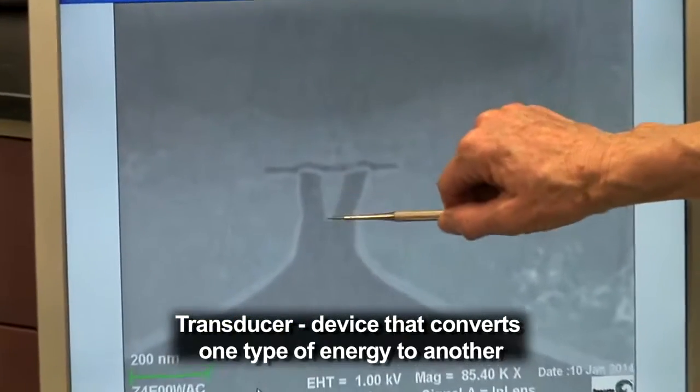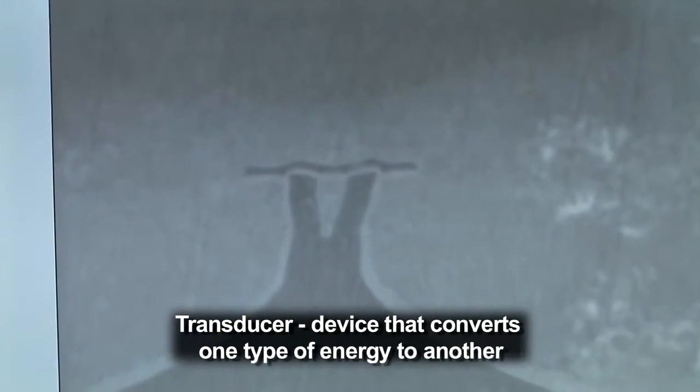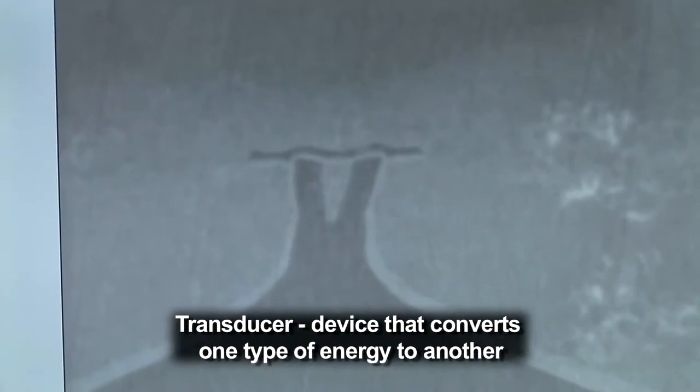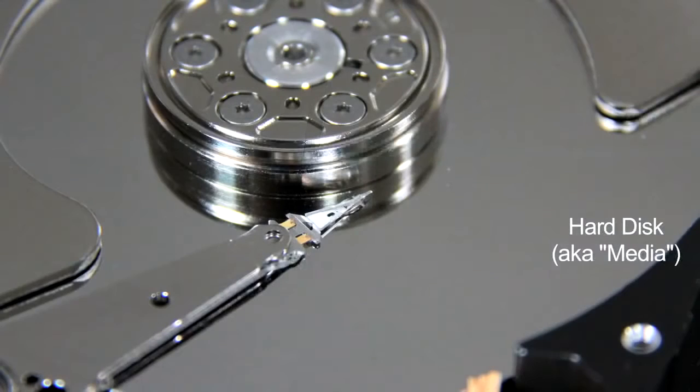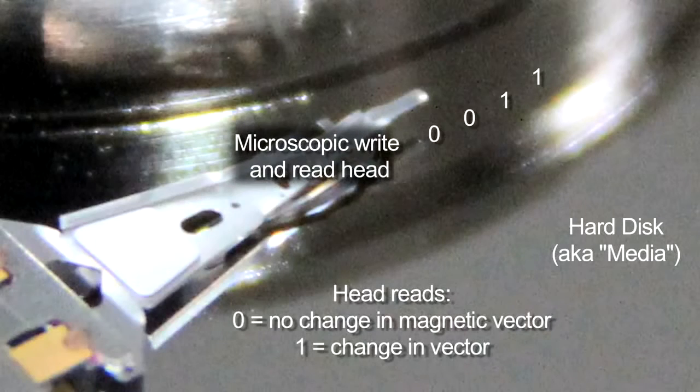So this little roughly triangular shaped feature can be thought of as the size of a bit. When we write, and this is the write pole, the flux is essentially focused through that pole. The corresponding area on the media below it is magnetized.